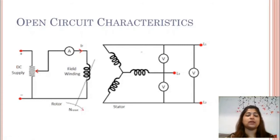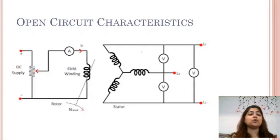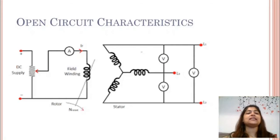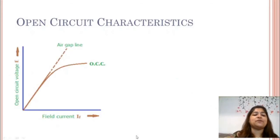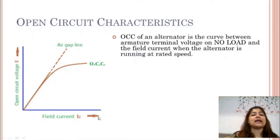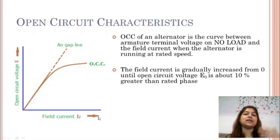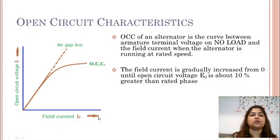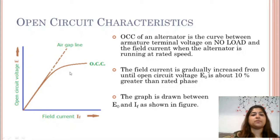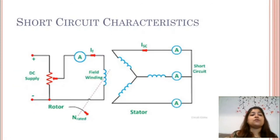When you give excitation to the field winding slowly and increase the current in the field winding, the voltage builds up across the armature winding. You note down this increment in voltage with the increase in current, take five to six readings, and then plot a graph. When you plot a graph between field current IF and open circuit voltage, the characteristic you get is called OCC — open circuit characteristics. The field current is gradually increased from zero until you get the open circuit voltage graph between E0 and IF.